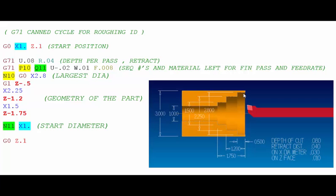So the second G71 line starts with two sequence numbers, the P10 refers to the N10 which is the start of the geometry and the Q11 refers to the N11 at the bottom of the geometry.